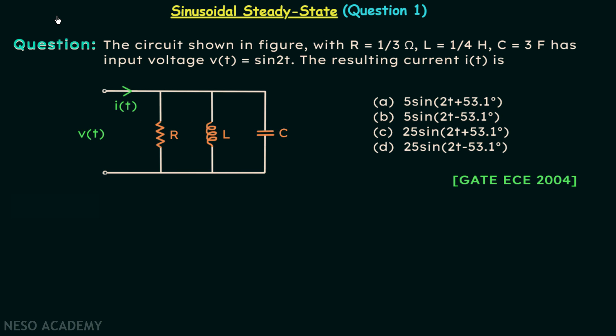In this presentation we are going to take question number 1. According to this question we are having this circuit in which the input voltage V(t) is equal to sin(2t). We need to find out the resulting current I(t), which is this current when the resistance is equal to 1/3 ohm.